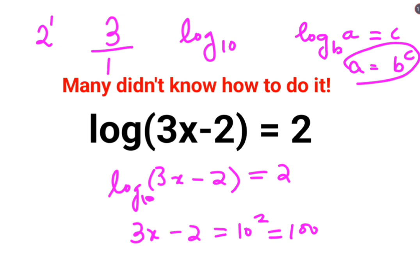So, I can say that 3x minus 2 equals to 100. Now, in order to find the value of x, you will add 2 to both sides. So now, you are left with 3x equals to 102.